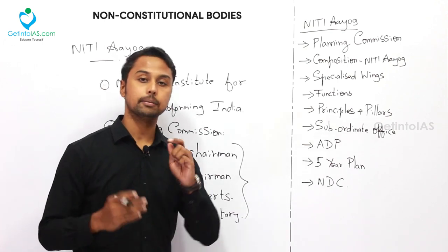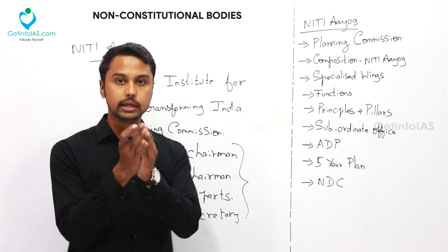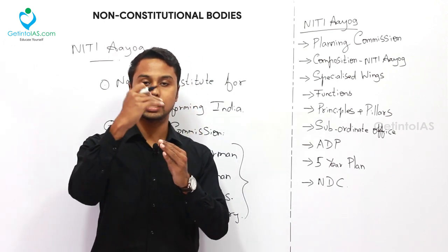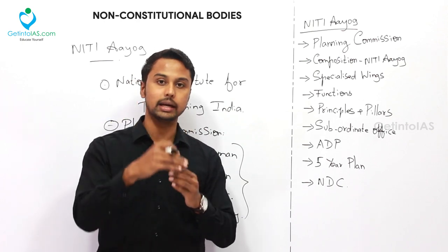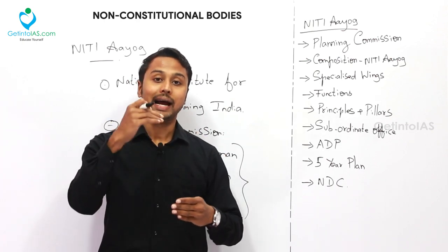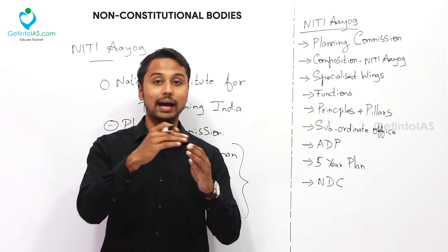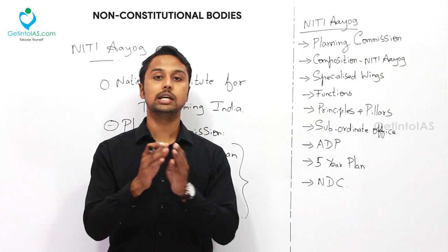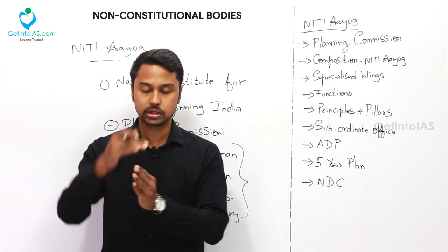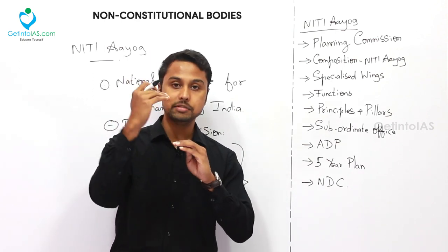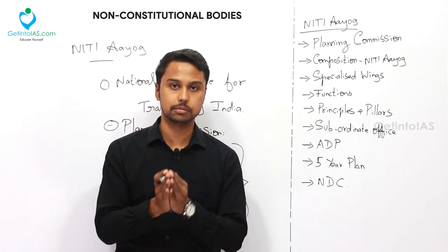There are specialized divisions within the Planning Commission. One is the Technical Committee, the second is the Planning Advisory, and the third is the Branch Housekeeping Committee. These are the three sub-divisions inside the Planning Commission.